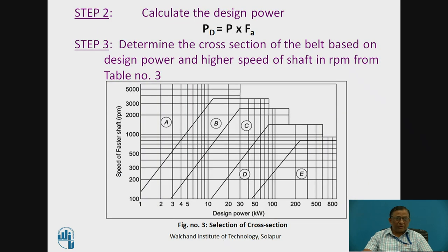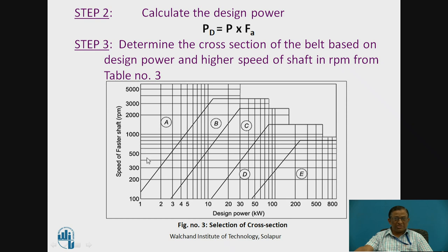After getting the load correction factor, we calculate the design power as power to be transmitted multiplied by the correction factor for the load seen from the chart. After this, we determine the cross section of the belt based on design power, considering the higher speed of the shaft. This is shown in a standard chart using design power in kilowatts and higher shaft speed. For example, at 10 kW design power and 1000 RPM of the smaller pulley, the selection falls in section B, which gives the standard cross section for overall economy of the belt drive.